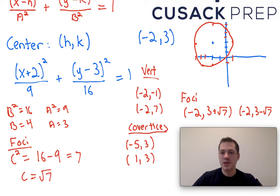Square root of 7 is somewhere between the square root of 4 and the square of 9. So it's somewhere between 2 and 3. And since it's our y value that's changing, we're going to plot something somewhere between 2 and 3 above the center, and somewhere between 2 and 3 below the center.